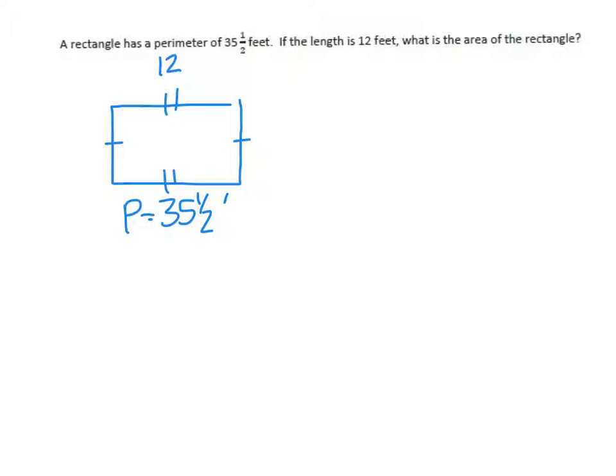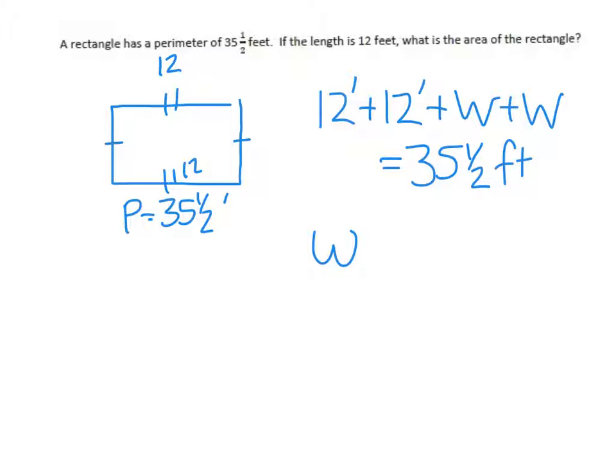So that's 12, which means this is 12. So 12 feet plus 12 feet plus the width plus the width is equal to 35 and one half feet.